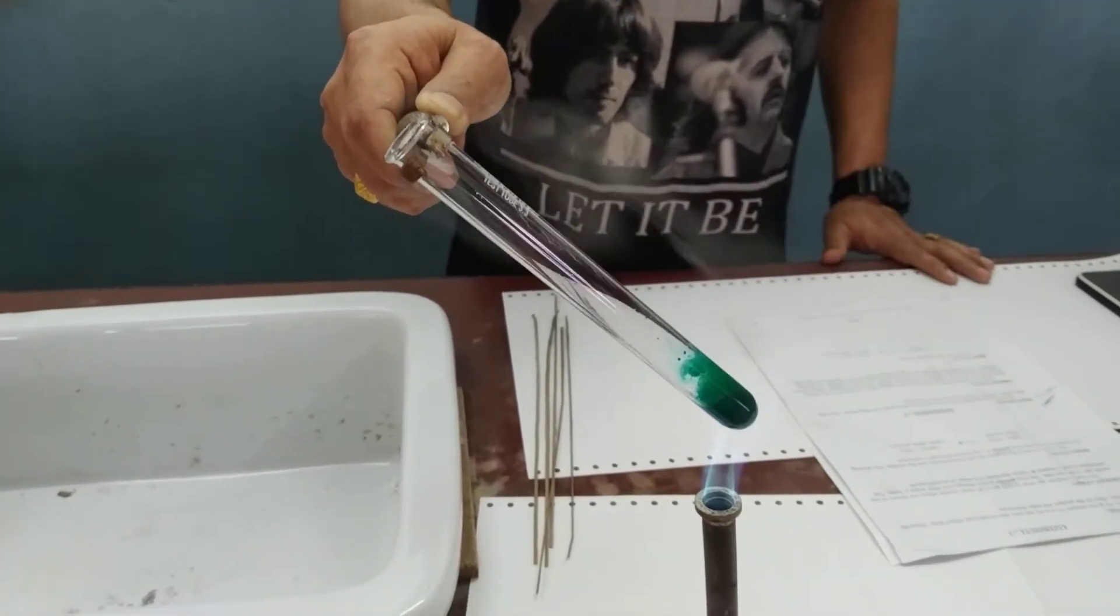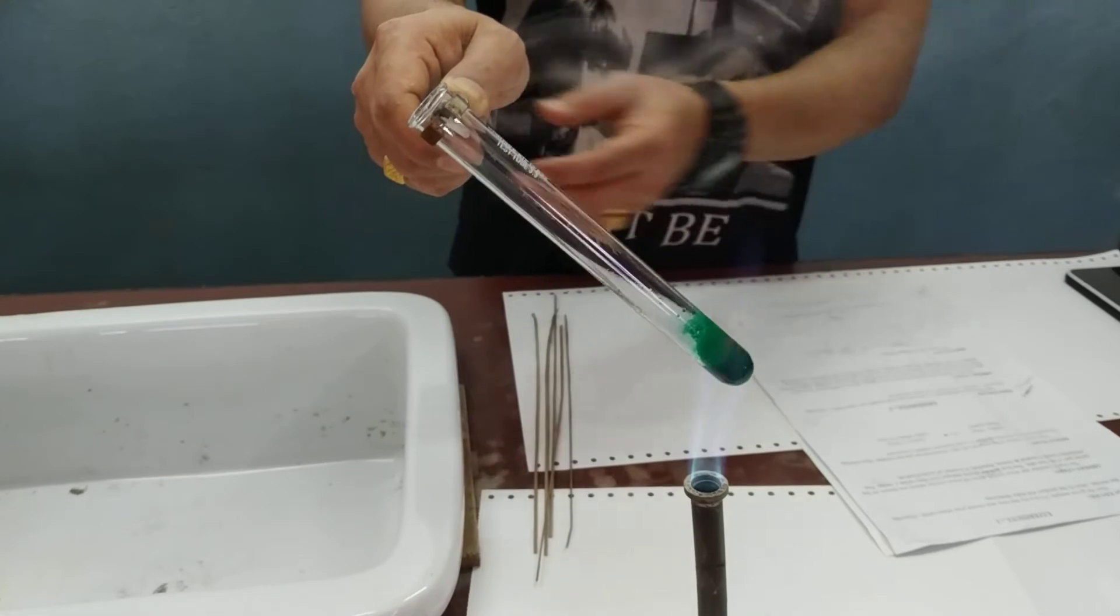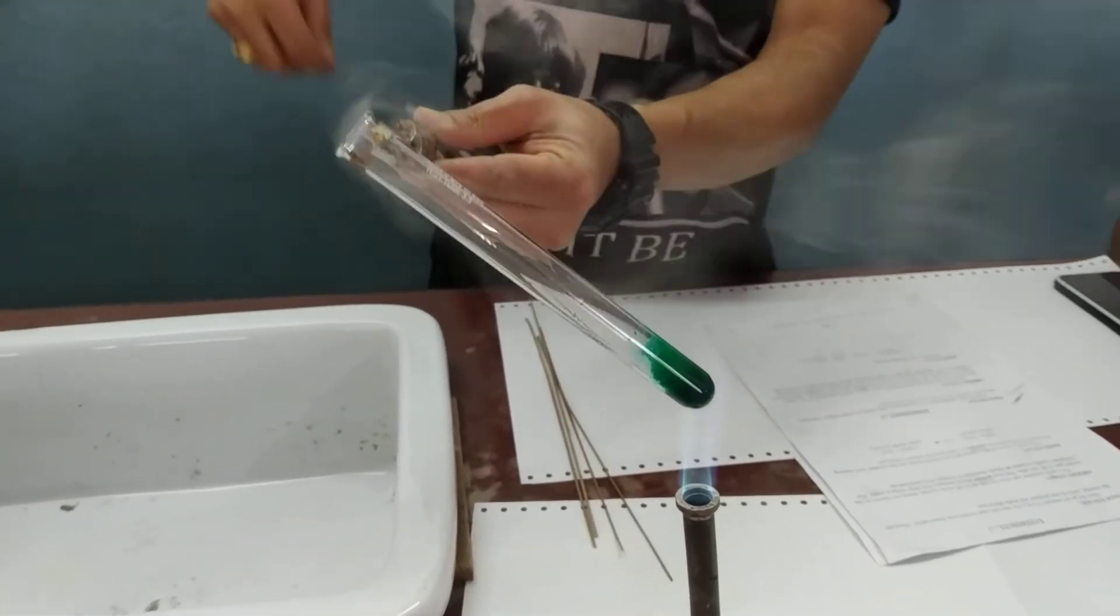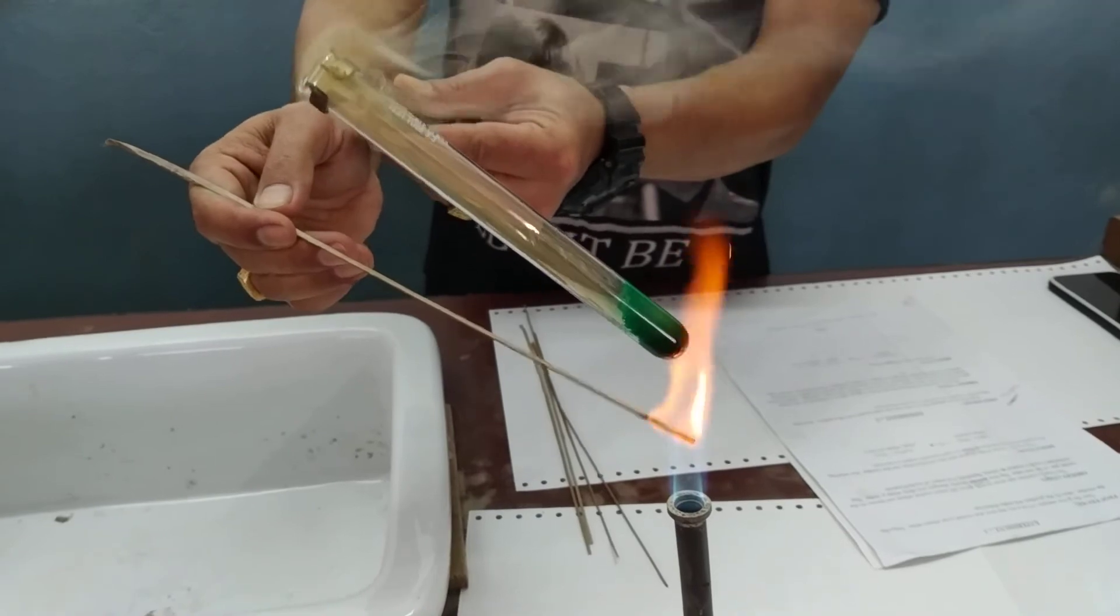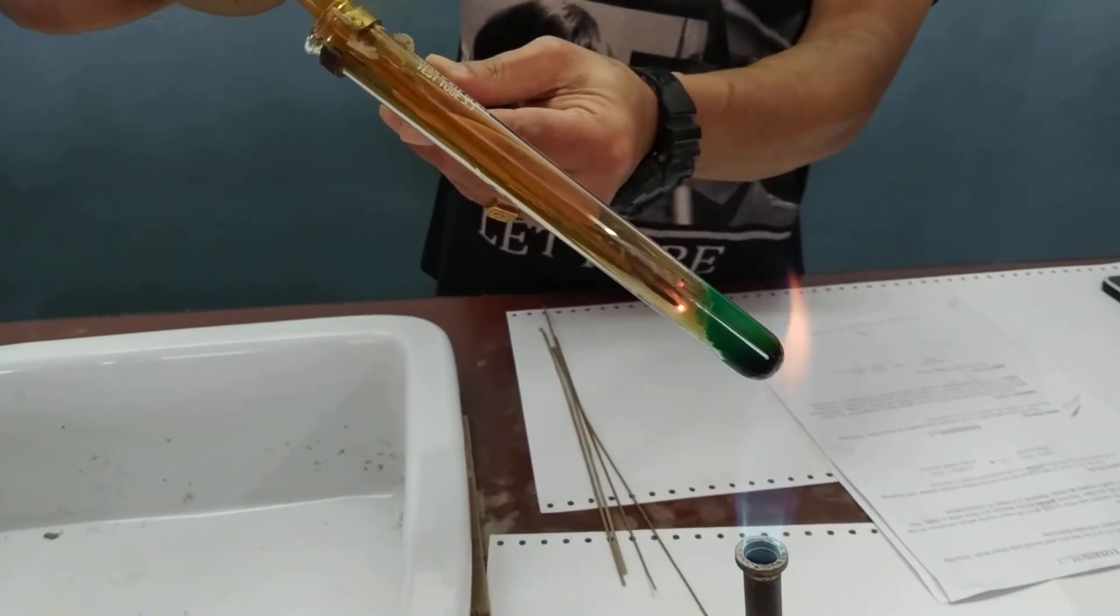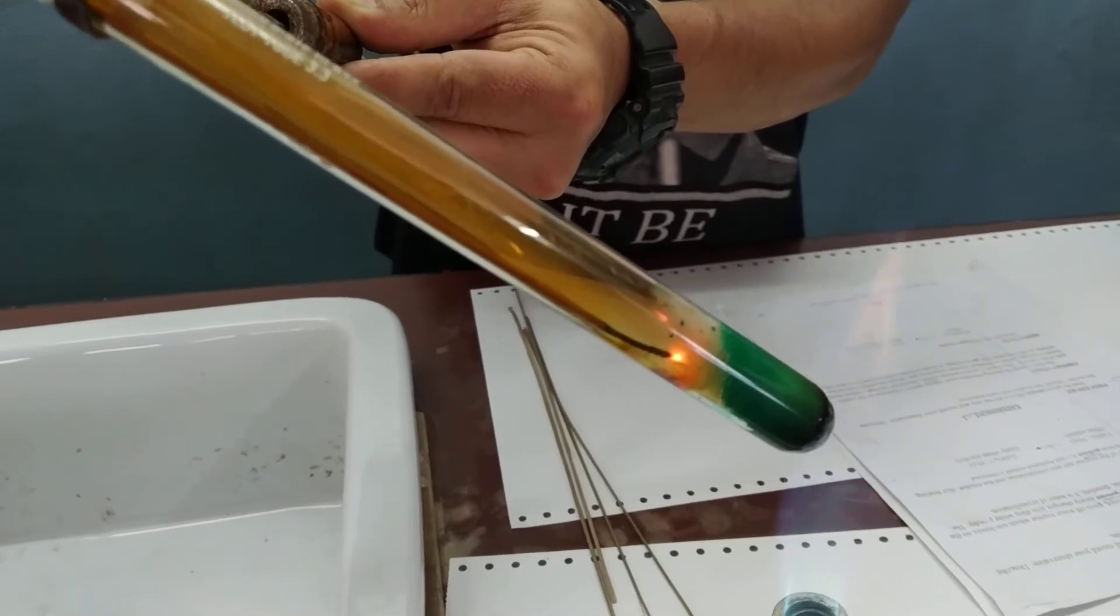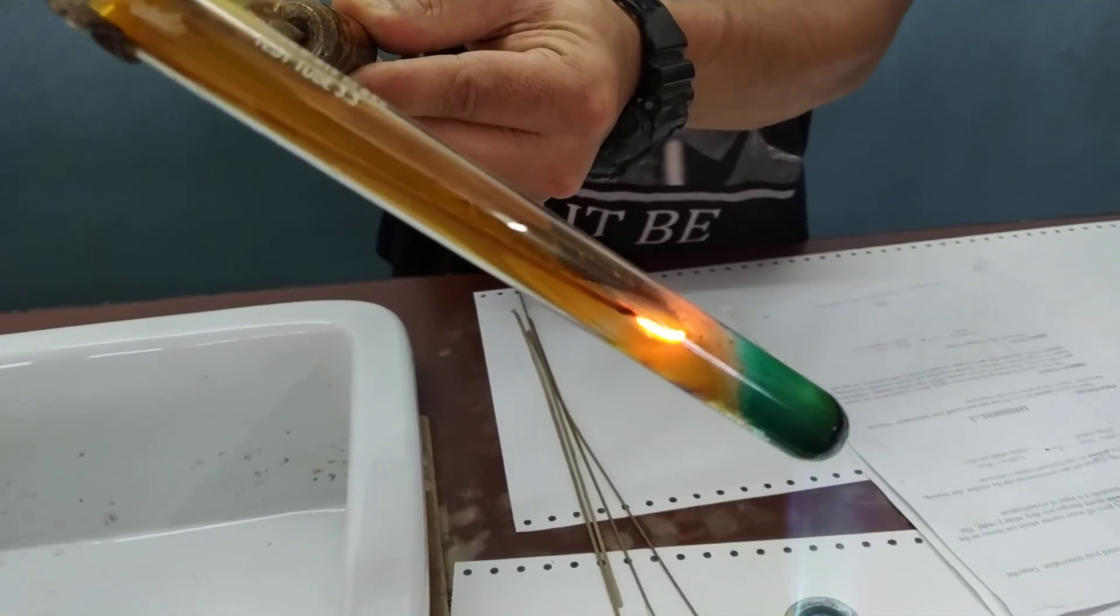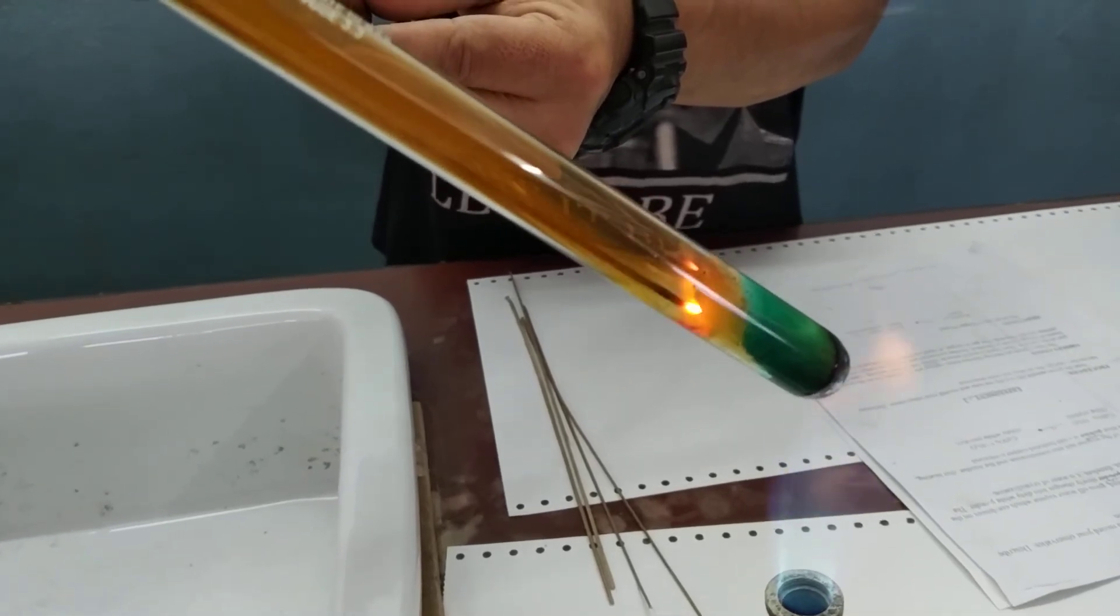The reddish brown fumes are nitrogen dioxide. The colorless gas that rekindles the glowing splint is also being evolved. As you can see now, the reddish brown fumes are visible, and the glowing splint glows brighter because oxygen is being evolved.